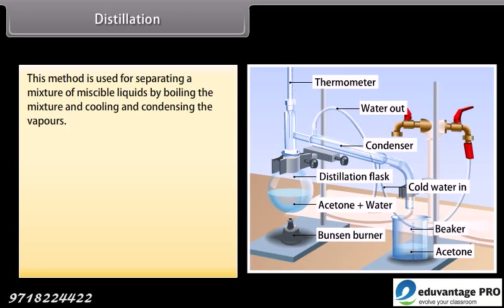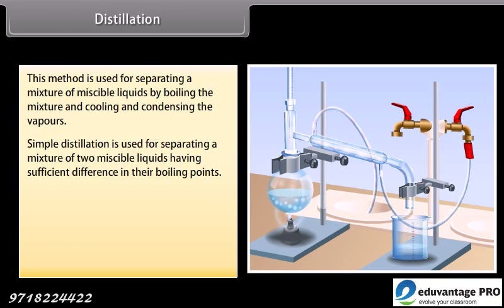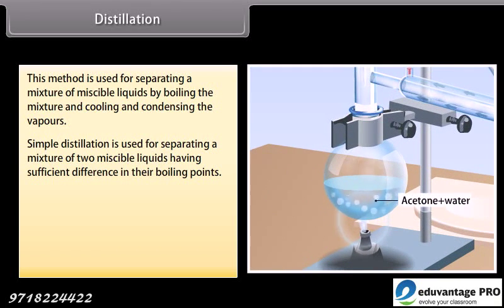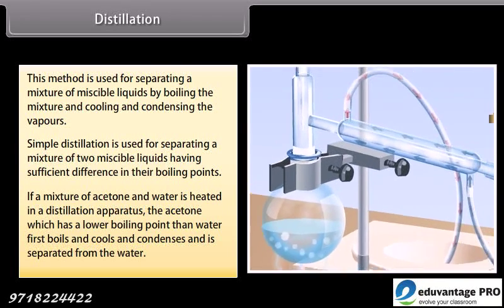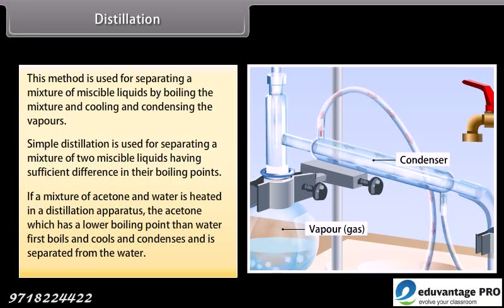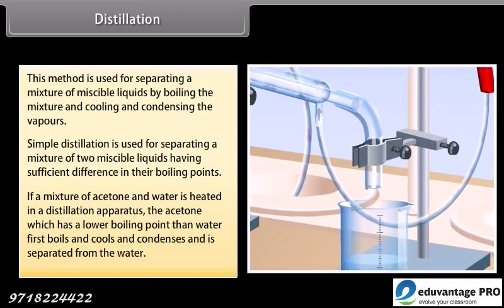Distillation: This method is used for separating a mixture of miscible liquids by boiling the mixture and cooling and condensing the vapors. If a mixture of acetone and water is heated in a distillation apparatus, the acetone, which has a lower boiling point than water, first boils and cools and condenses and is separated from the water.